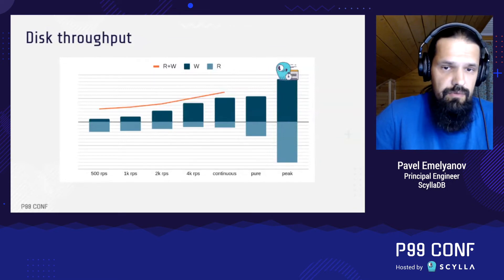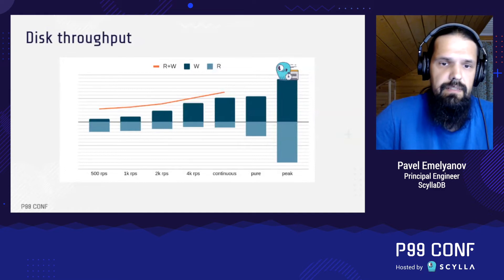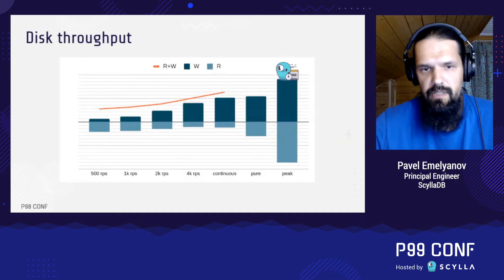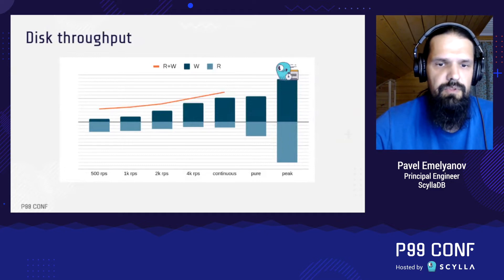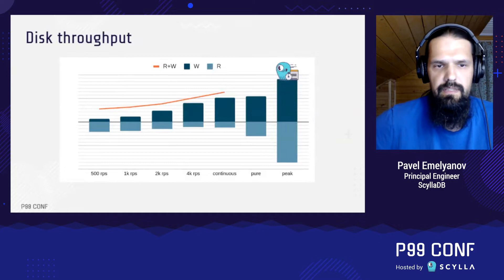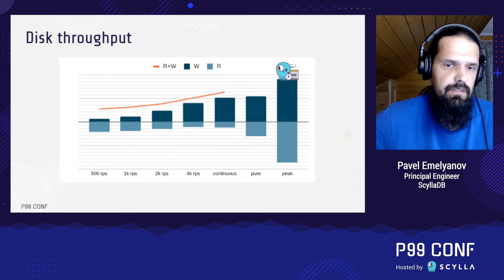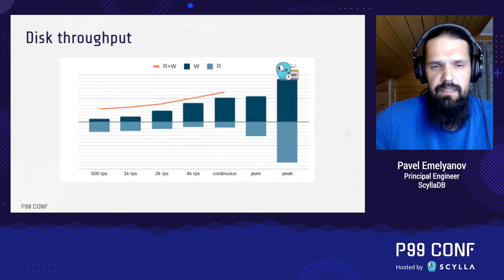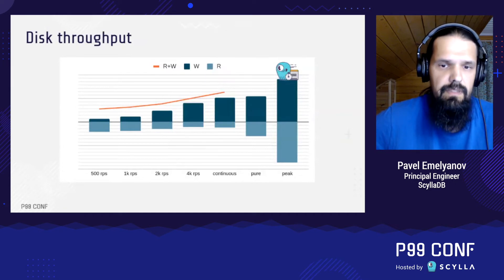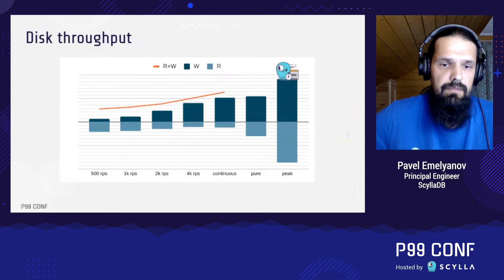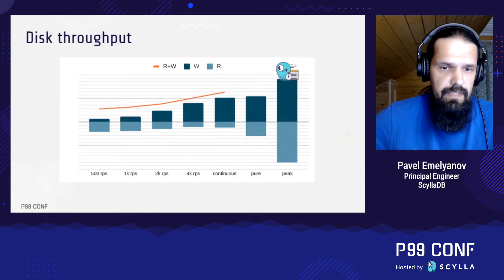However, when the disk needs to do reads and writes at the same time, it won't treat reads and writes equally. Here's the plot showing how it will. The rightmost bar is the maximum read and write bandwidth a disk can do. The next bar, called 'pure', is the same but for the concurrency of one. Since disks have internal parallelism, the pure bandwidth is lower than the peak one, so that's okay. The next bar, 'continuous', is where disk unfairness reveals itself.